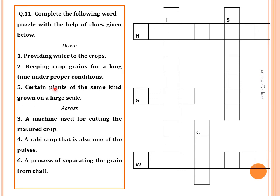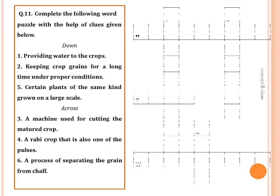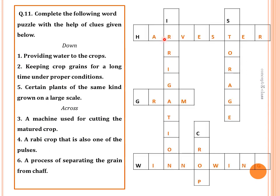Question eleven is a puzzle where we fill in clues. Providing water to crops is called irrigation. Keeping crops or grains for a long time under proper conditions is called storage. Certain plants of the same kind grown on a large scale is called a crop. A machine used for cutting matured crop is called a harvester. A rabi crop that is also one of the pulses is gram. The process of separating grain from chaff is called winnowing.